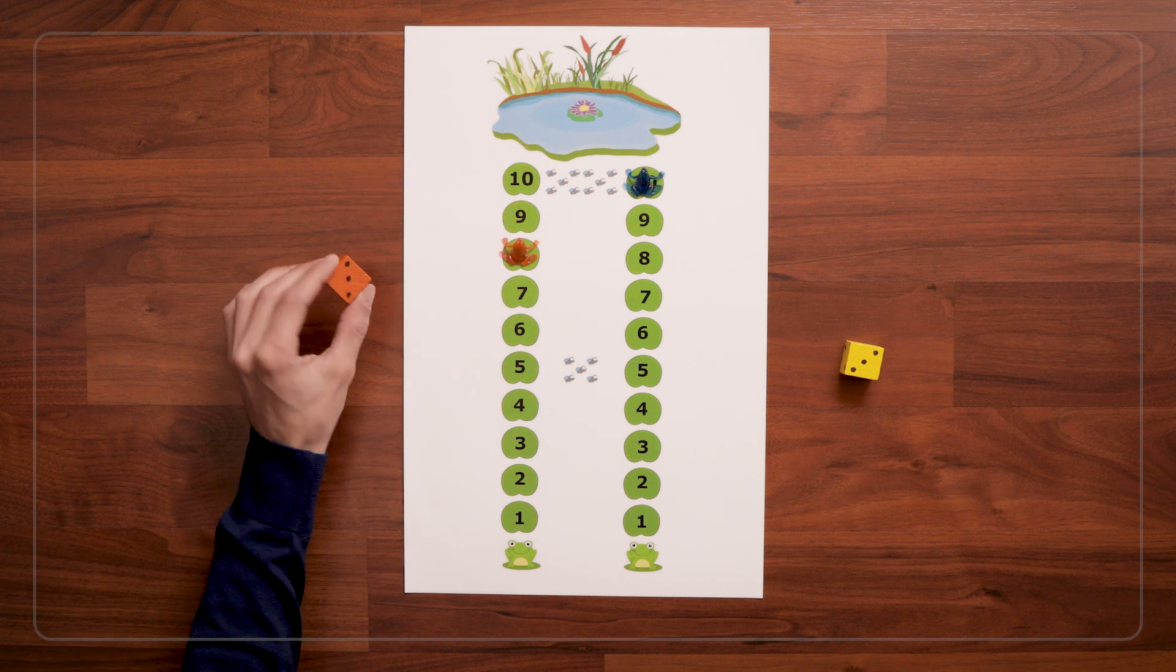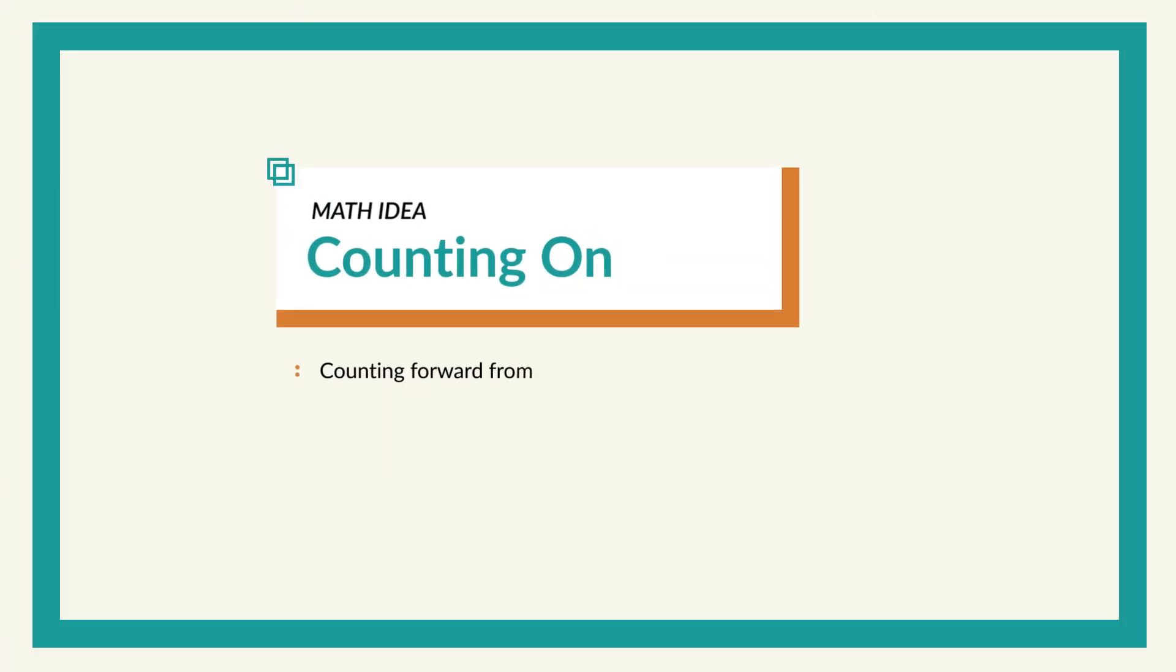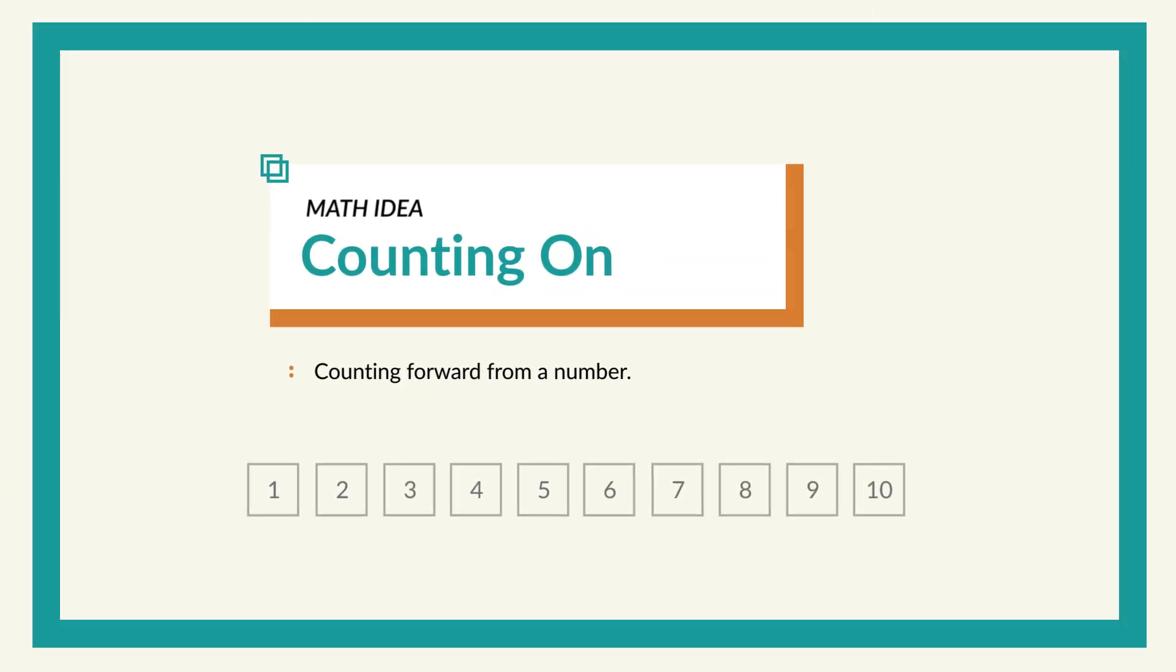When children are ready, the next stage in this game is to practice counting on. Counting on is the idea that if you have, say, 5 plus 3, instead of starting at 1 and counting all the way up to 8, you start at 5 and count on from 5.